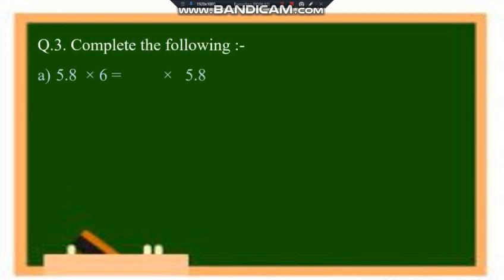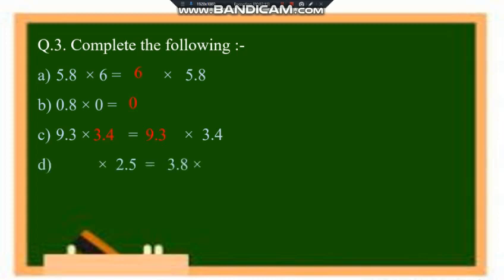Now we have to use the properties to fill in the blanks. 5.8 into six equals six into 5.8 — first property. 0.8 into zero equals zero — multiplying by zero gives zero. 9.3 into dash equals dash into 3.4: since a into b equals b into a, the dashes are 3.4 and 9.3. Here, 3.8 and 2.5 remain the same digit — multiplying a decimal number by one gives the decimal itself. If the product is zero, we have multiplied the decimal number by zero.